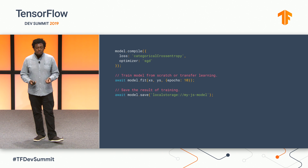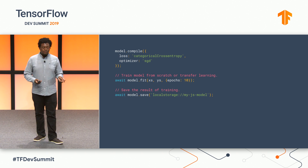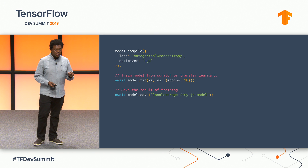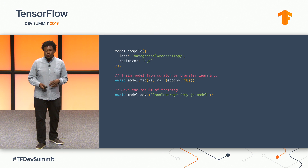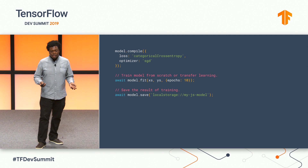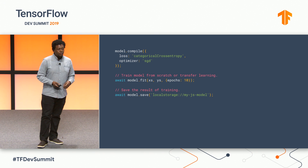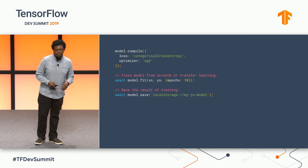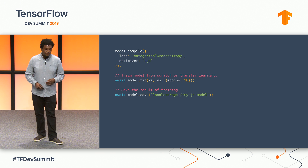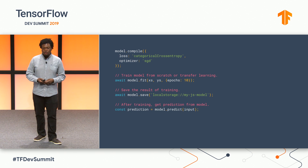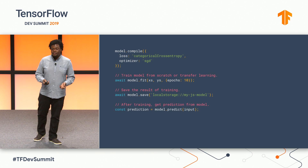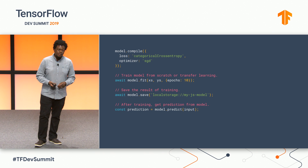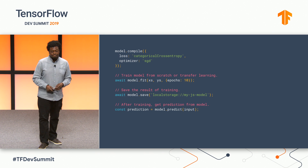Once the model is done training, we can save the model — here we're saving it to the browser's local storage. We support saving to a number of different targets, both on the client and on the server. And finally, just like you're used to, you can use model.predict to get a result from the model.